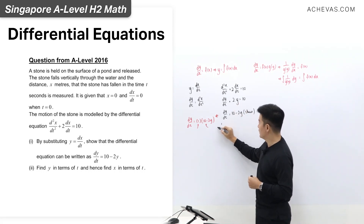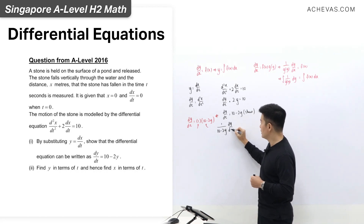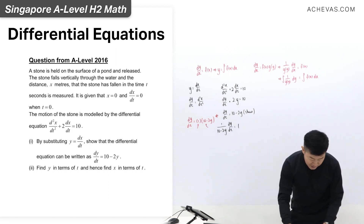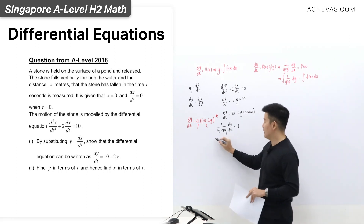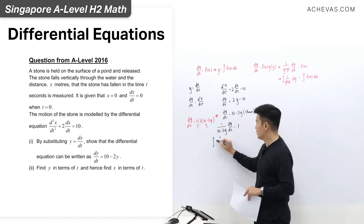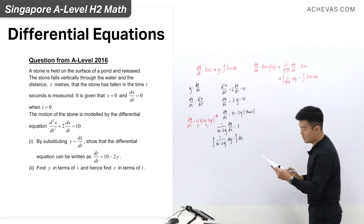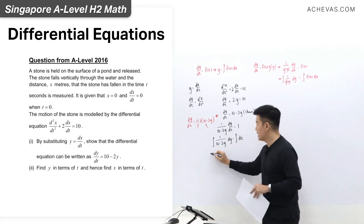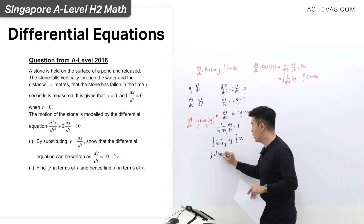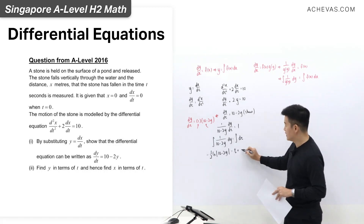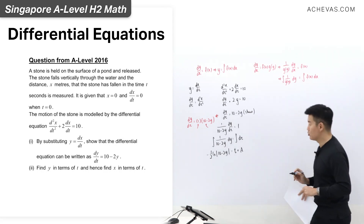So I'm going to divide across to the other side, giving me 1/(10 − 2y) · dy/dt = 1. Integrating both the left and the right-hand side with respect to t — on the left-hand side, it is going to be the integration of 1/(10 − 2y) dy, and on the right-hand side it is just going to be the integration of 1 with respect to t. On the left-hand side, it is −(1/2) ln|10 − 2y|, equal to t plus an arbitrary constant a.